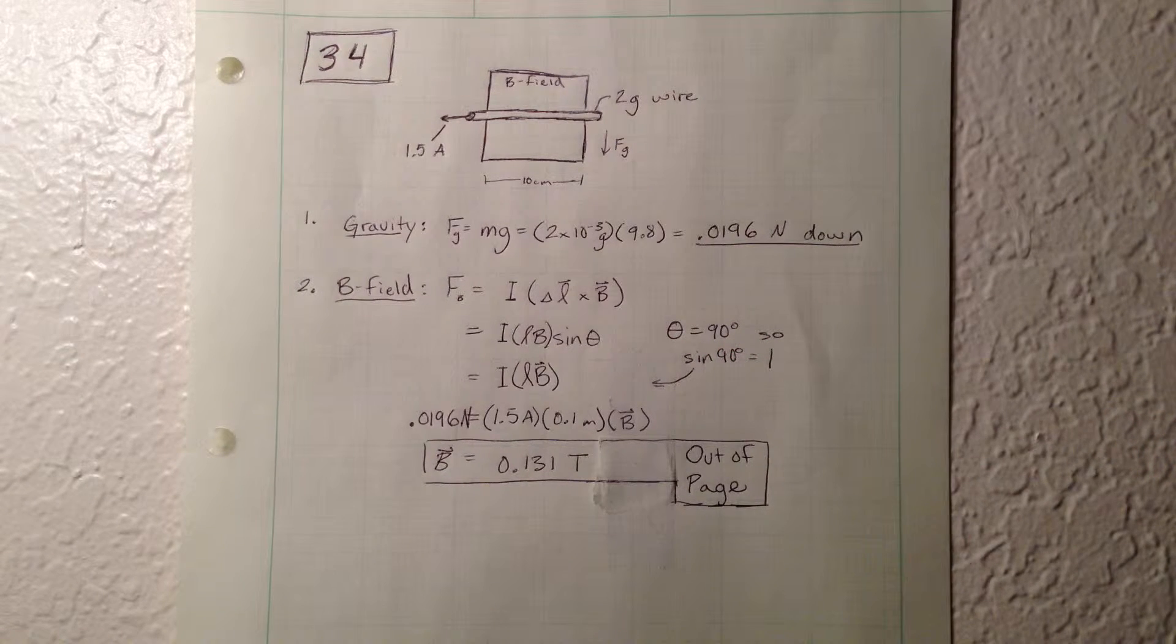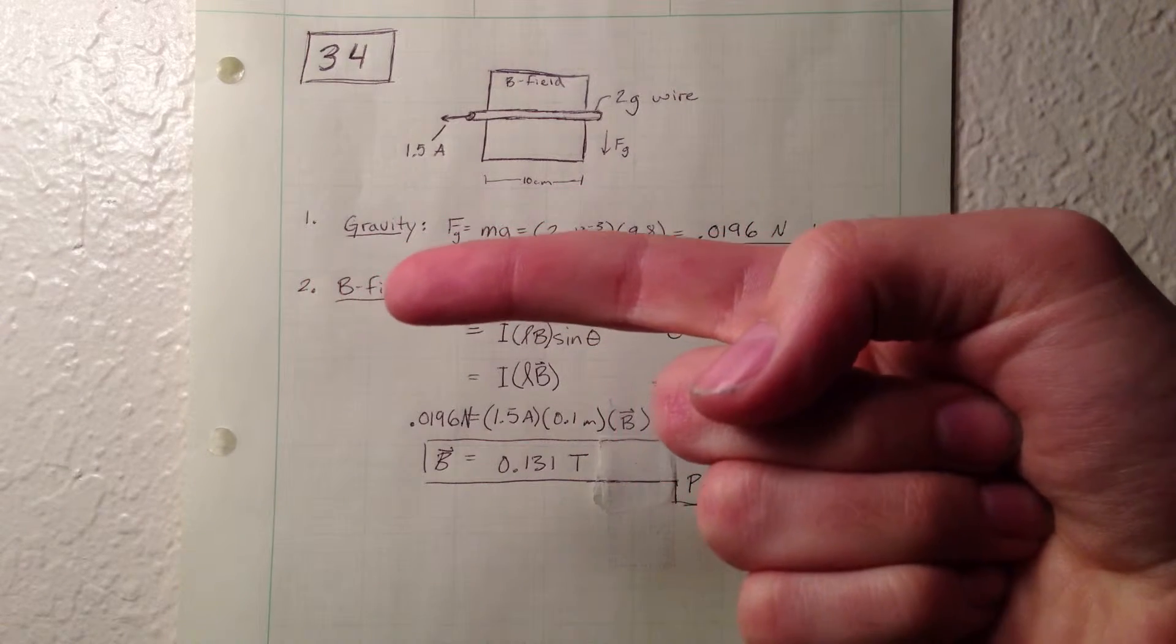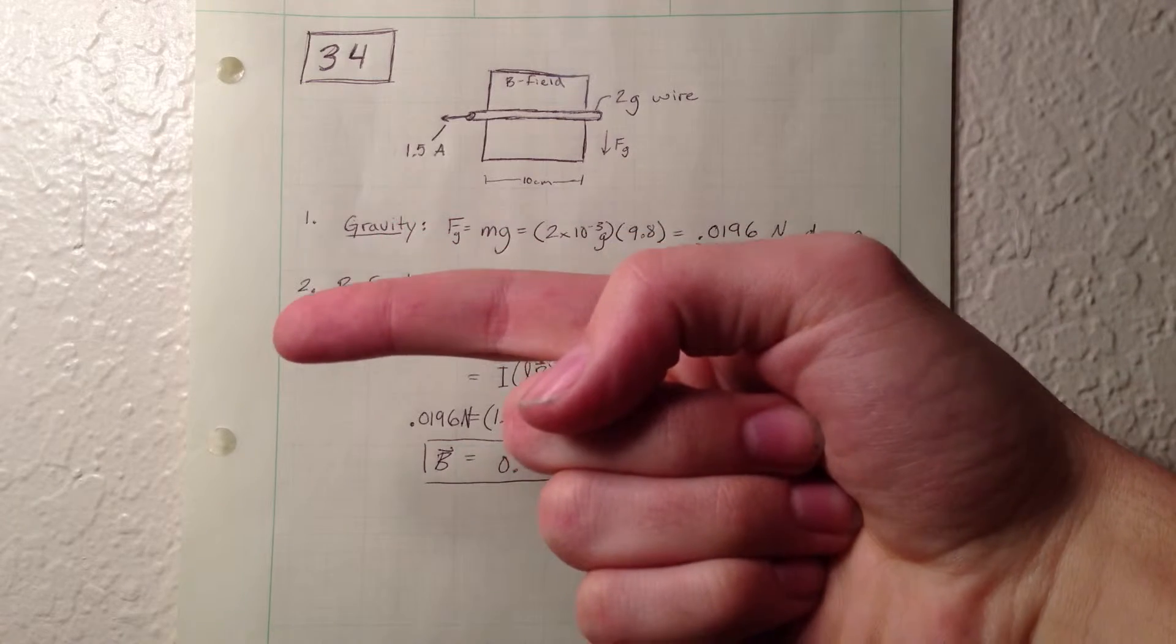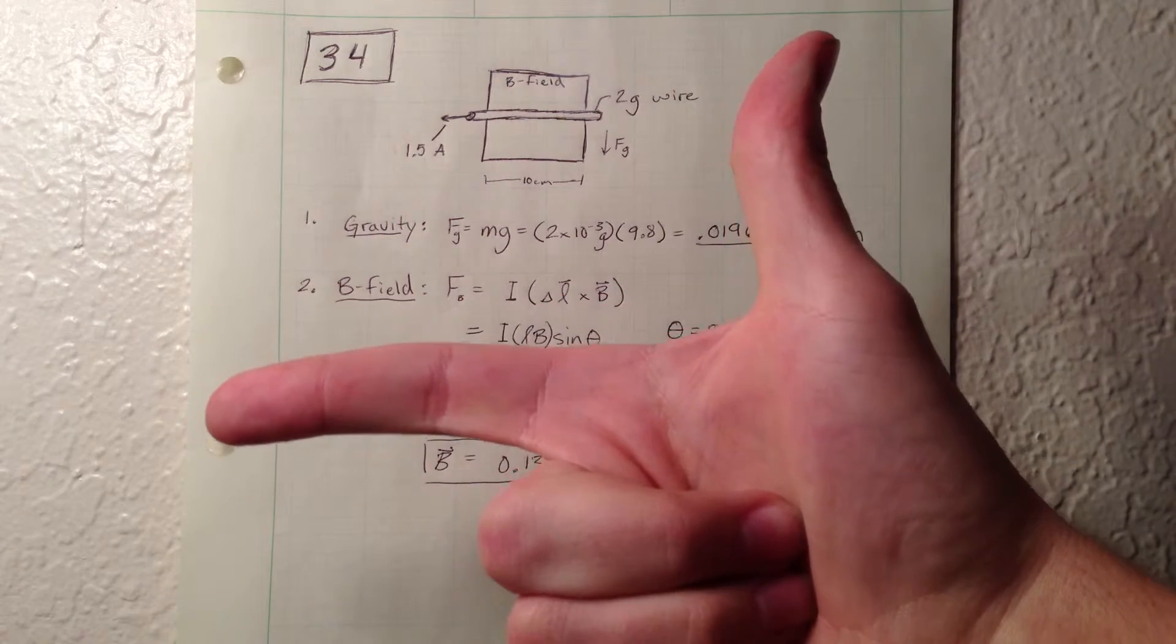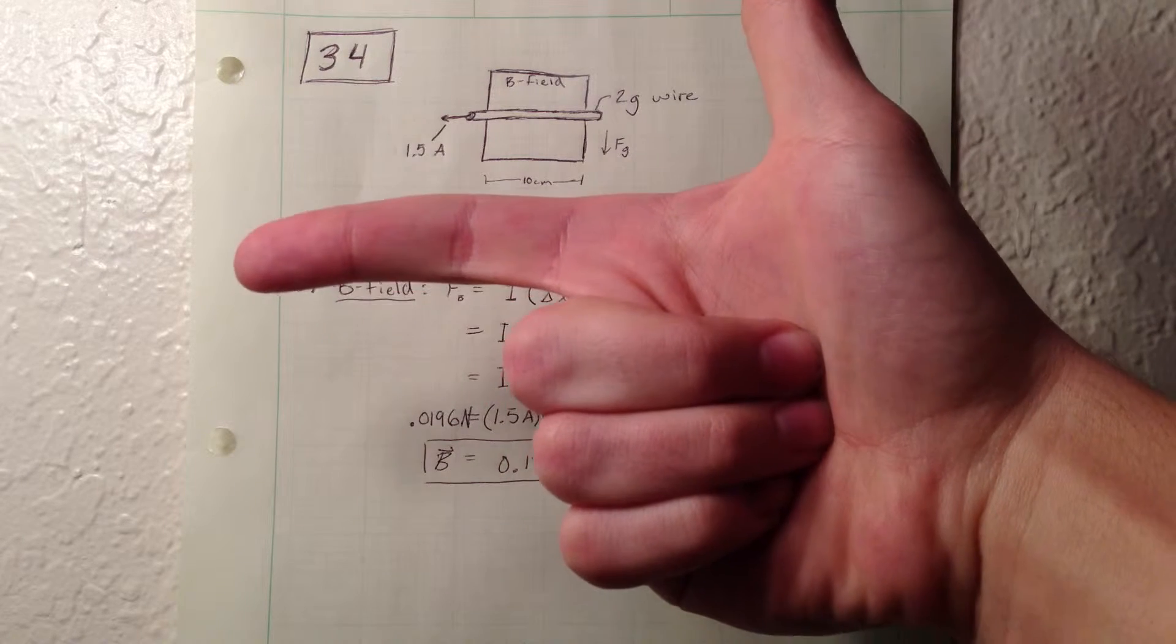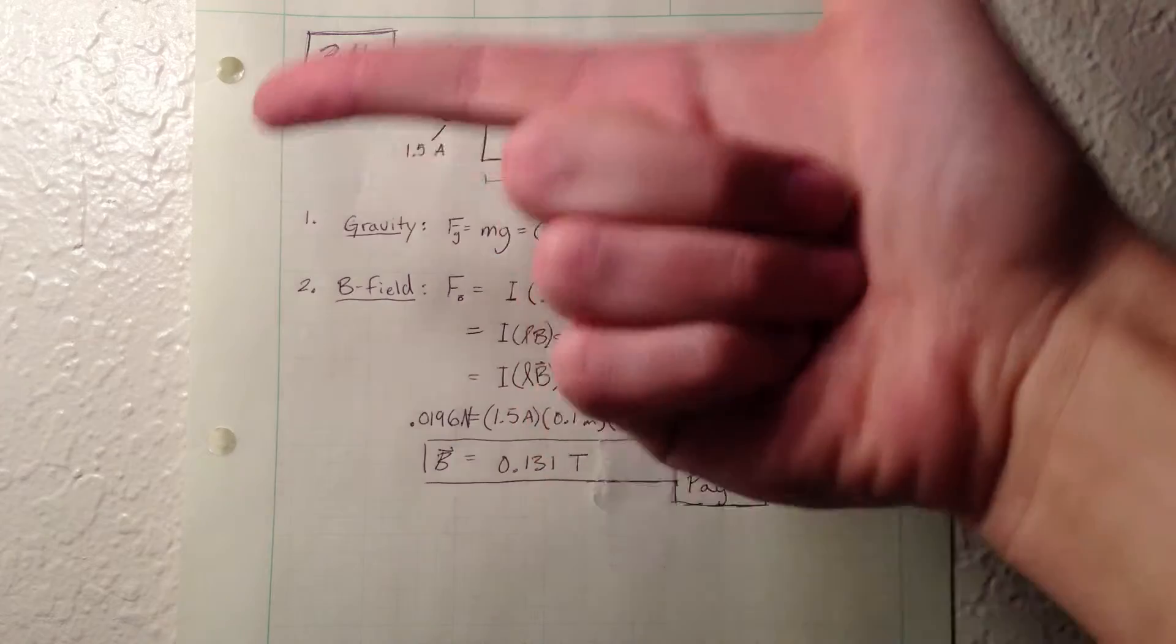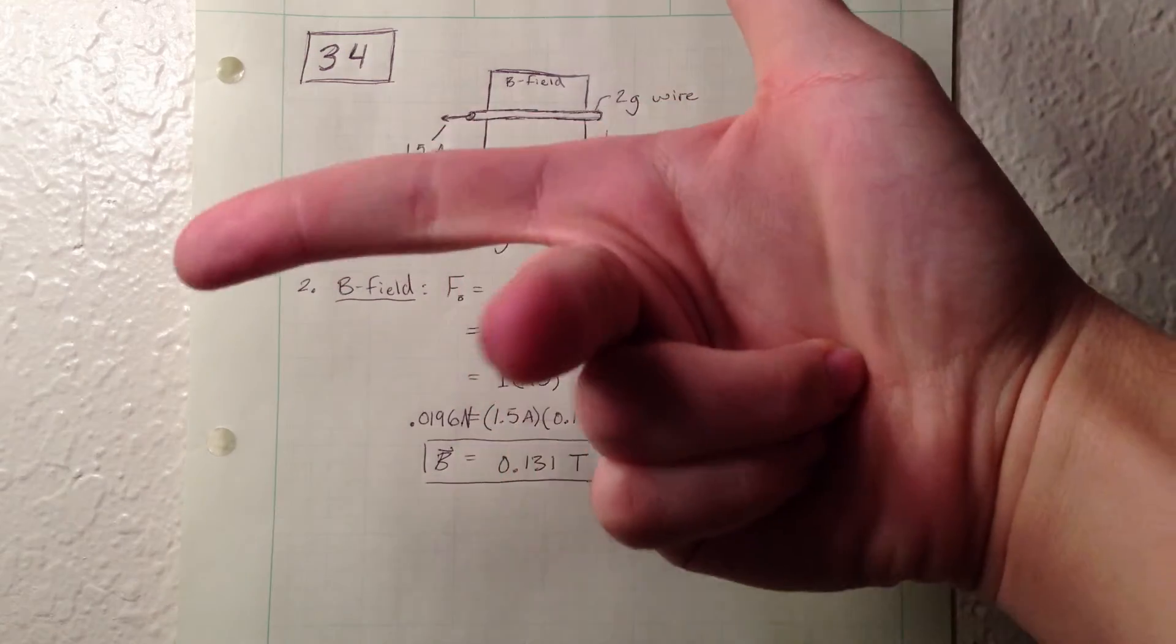And I can illustrate that with my hand. What we do is we point in the direction of the current. And our thumb ends up being in the direction of the force, which we want to be up in order to counteract gravity. And then you point your middle finger in the orthogonal direction of these two vectors. So that will be my middle finger pointing at the camera.